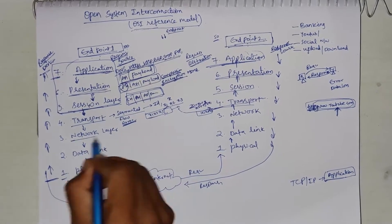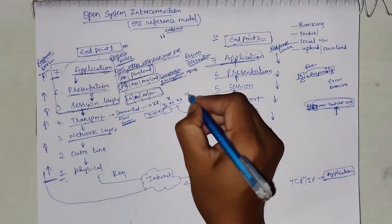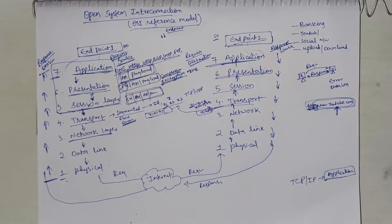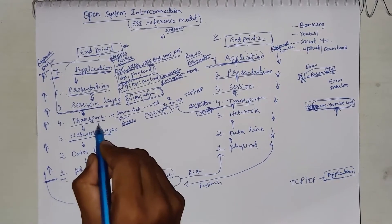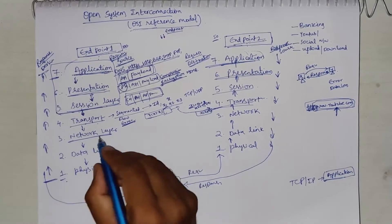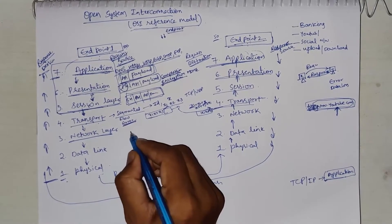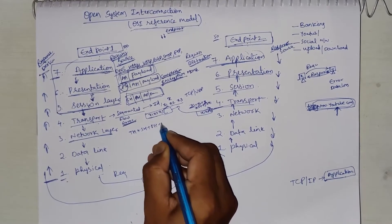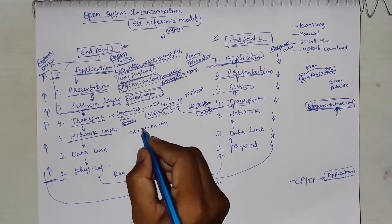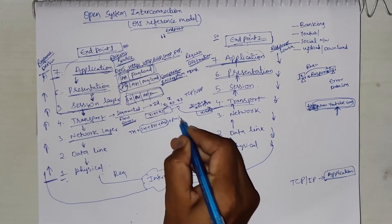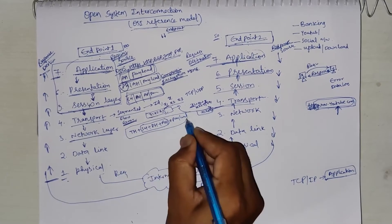Then the data is sent to the network layer. Transport layer adds its own header, so the payload for the network layer is: transport header plus session layer header plus presentation layer header plus application layer header plus the original payload. Network layer is helpful for further breaking segments into packets, because network layer devices like routers work based on Maximum Transmission Units (MTU).